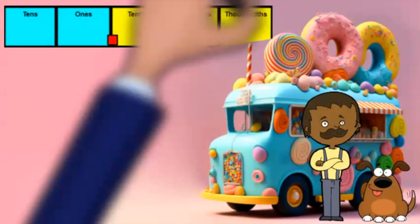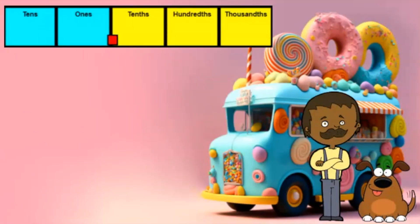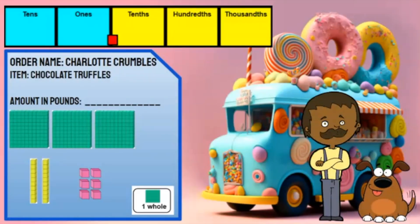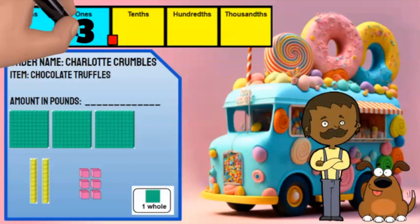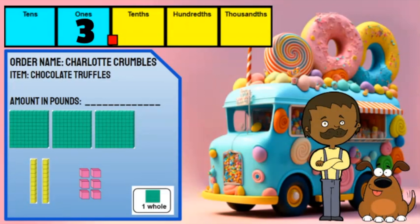I use a place value chart like this to help me out. I know that one flat equals one whole. In this model I notice there are three wholes shown in her order, so that tells me there needs to be a three in the ones place.